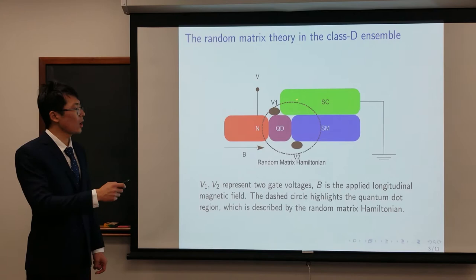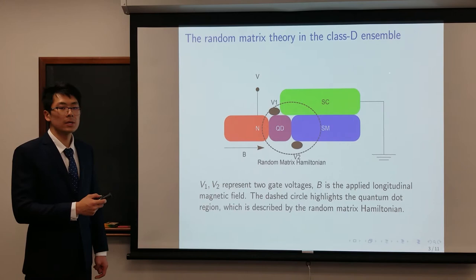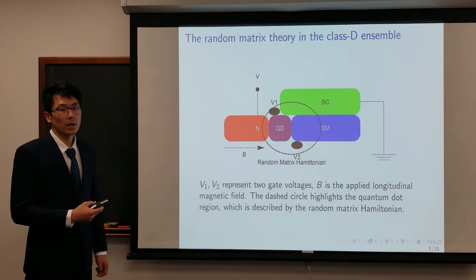We will treat the system as a whole quantum dot enclosed by this dashed line, which is described by a random matrix Hamiltonian. Here, V1 and V2 are just two gate voltages. We will show later how we can control the gate voltage in theory, like fine-tuning of an experiment.